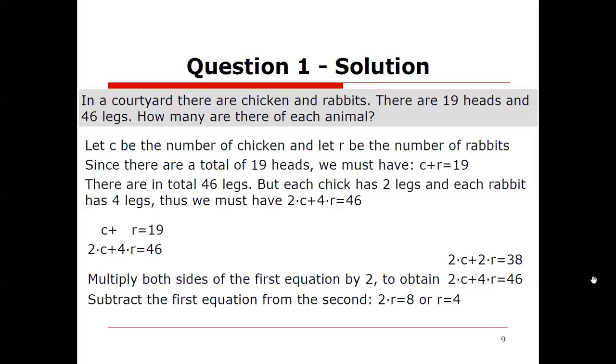Well 4r minus 2r will give us 2r and 46 minus 38 will give us 8 which means, don't everybody shout it at once, that r equals 4. We have four rabbits on our hands.